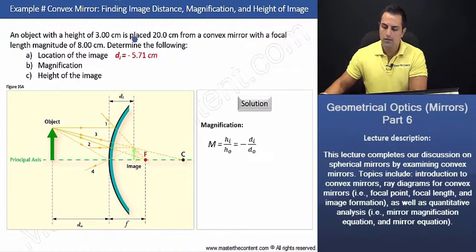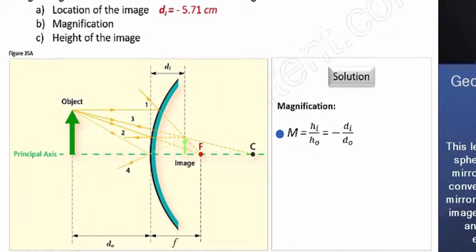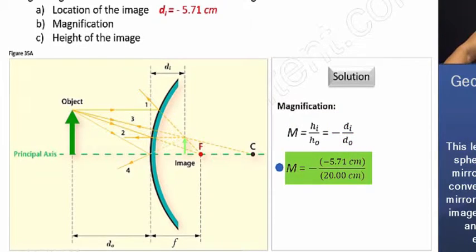Let's get right into it and start with our magnification equation. Beginning with the magnification equation, all we need to do is fill in our values. The image distance is negative 5.71 cm, and the object's distance given to us is 20 cm. And upon solving, we find that the magnification is 0.286.